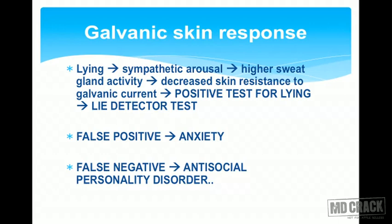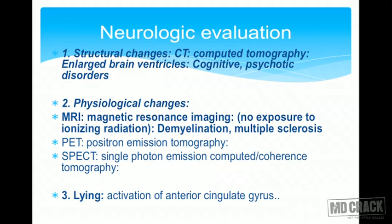Now we move on to neurologic evaluation. Structural changes can be identified on CT — computed tomography. For example, enlarged brain ventricles may be found in cognitive and psychotic disorders. We can also detect physiological changes by MRI — magnetic resonance imaging — which has the advantage of no exposure to ionizing radiation. By MRI, you can detect demyelination and conditions like multiple sclerosis.